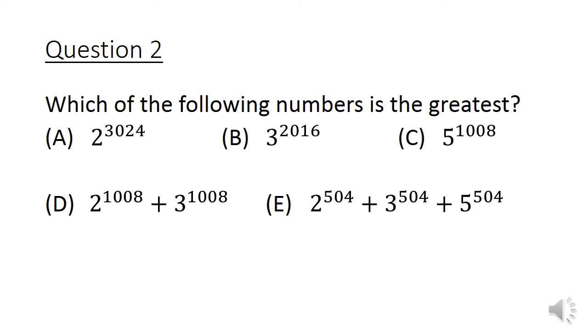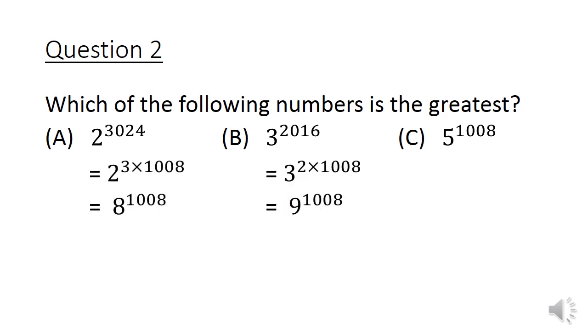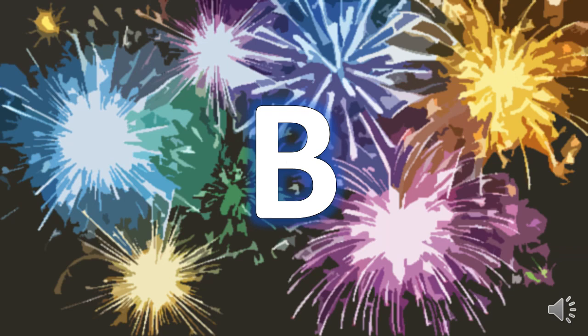Going back to the question, we have eliminated 2 options, leaving us 3 options left. Looking at these 3 choices, they have different bases and different powers. That makes it difficult to compare. But if we observe the powers closely, they are all multiples of 1008. So let's look at option A. We can change it to 2 to the power of 3 times 1008. By manipulating this, I can cube the 2 and give us a base of 8. Hence, I get 8 to the power of 1008. Option B becomes 9 to the power of 1008. And now, with all of them having the same power, I just compare the bases. Option B is the largest, bigger than option A and bigger than option C. So the answer is option B. Did you get it?